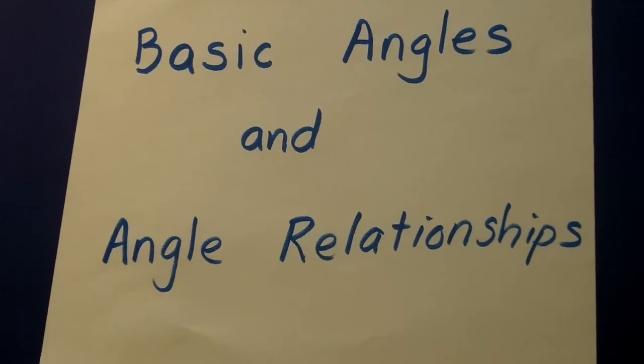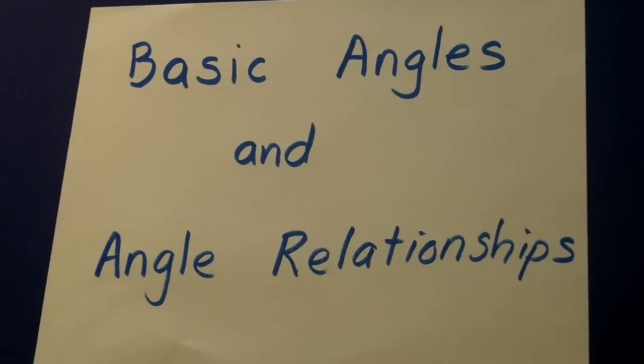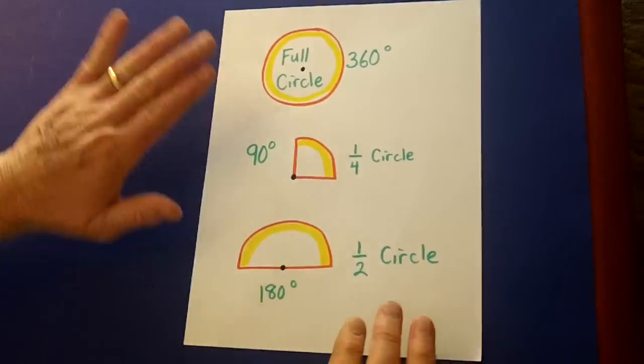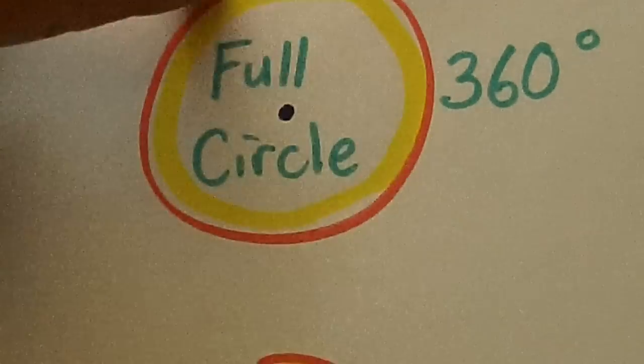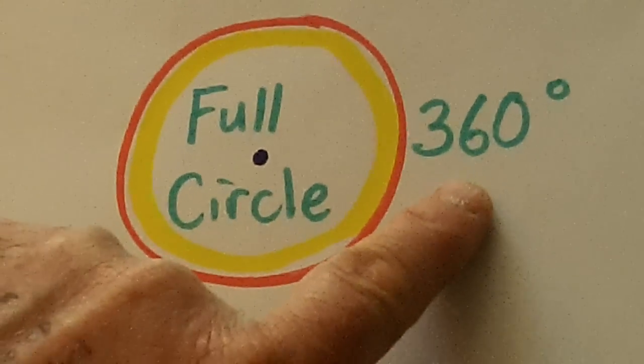This lesson will focus on basic angles and angle relationships. One of the first things we need to review very quickly is that in a full circle there are 360 degrees.